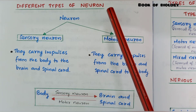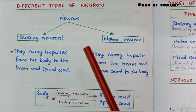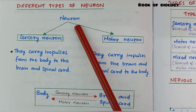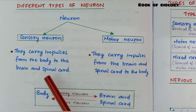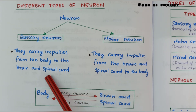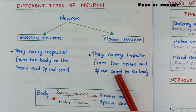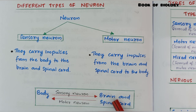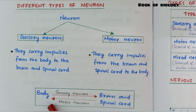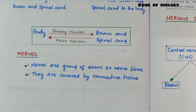Different types of neuron. There are two types: sensory neuron and motor neuron. Sensory neurons carry impulses from the body to the brain and spinal cord. Motor neurons carry impulses from the brain and spinal cord to the body.